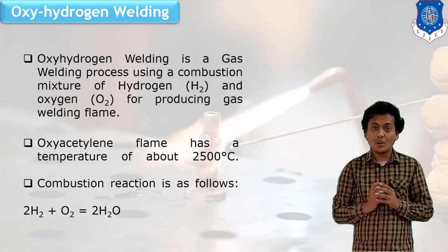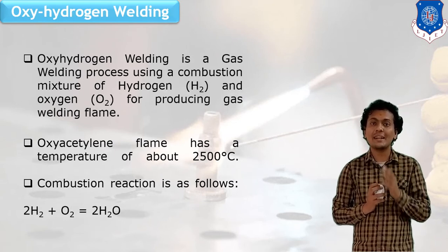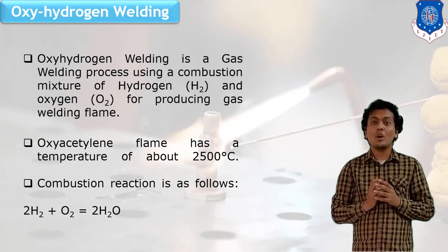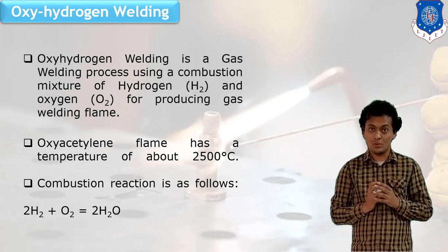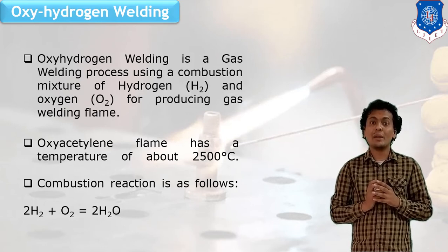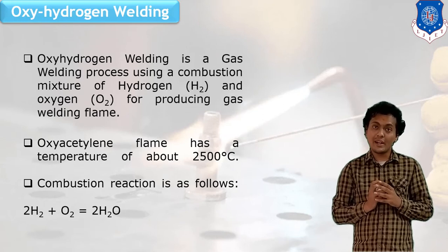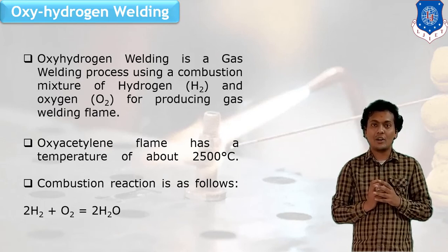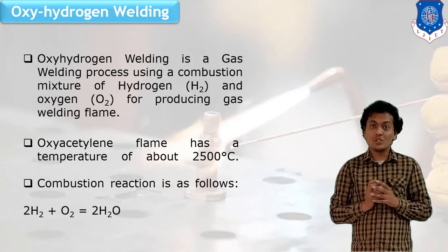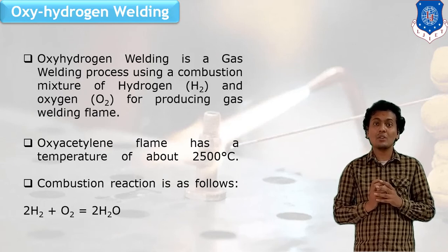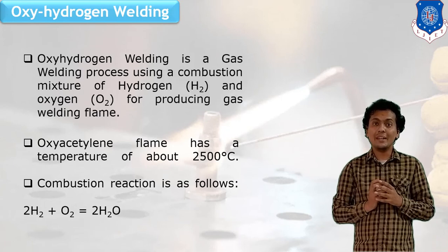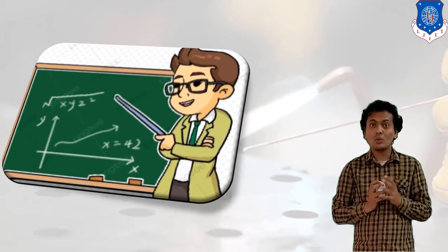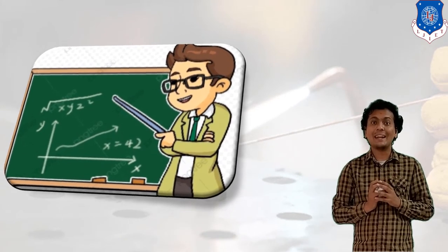Now let's discuss oxy-hydrogen welding. As in oxy-acetylene gas welding, oxygen and acetylene are used, but in oxy-hydrogen welding, oxygen and hydrogen are used instead. However, storage of hydrogen is a bit difficult and there is a risk in hydrogen storage. A good amount of heat will be generated by burning of hydrogen and oxygen. In place of acetylene, we can use hydrogen. A chemical reaction is also described, as heat is generated with help of this reaction. This is all about the oxy-acetylene and gas welding setup and equipment. Thank you.